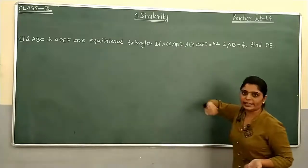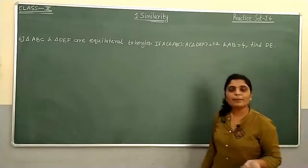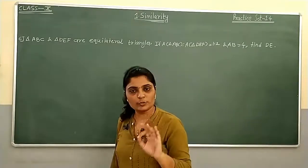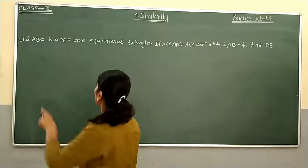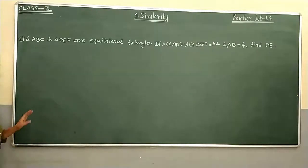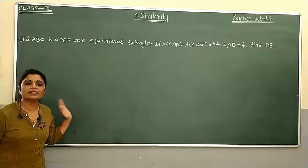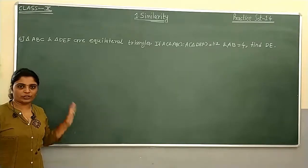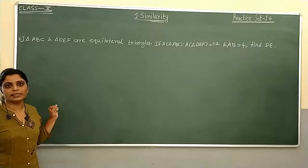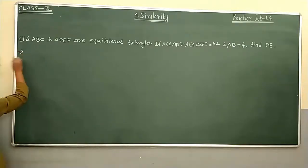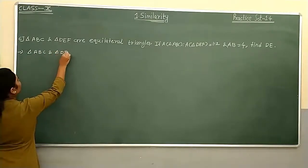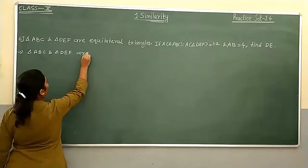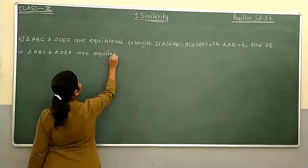The area ratio of the triangles is given and a side is also given, but we cannot directly use the theorem of areas of similar triangles here. Why? Because for that, both triangles must be similar, and it is not stated anywhere in this question that ABC and DEF are similar triangles.